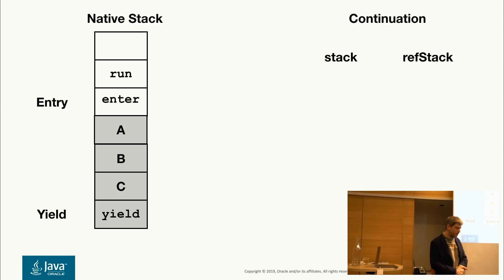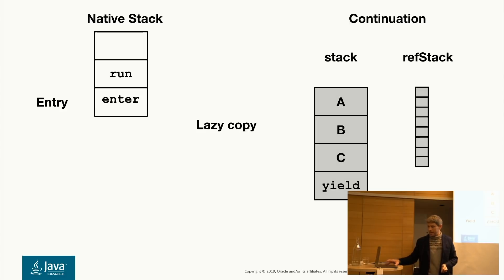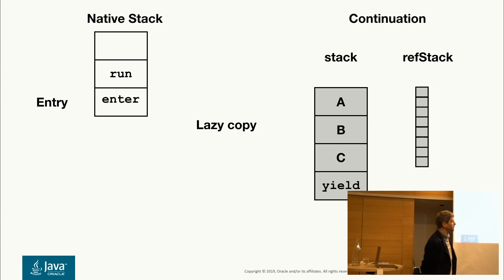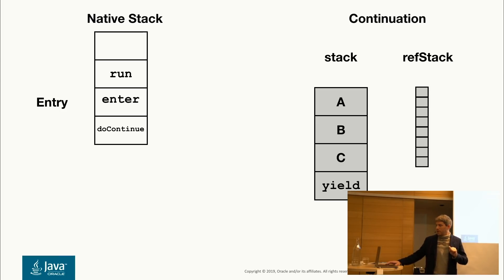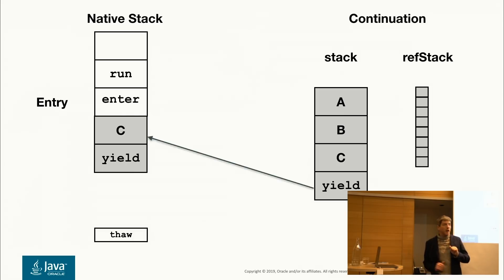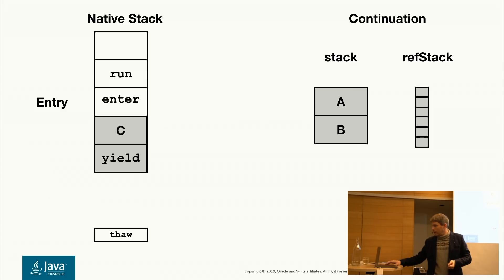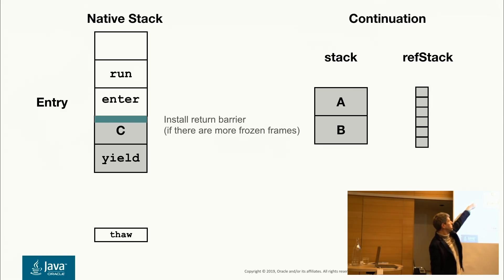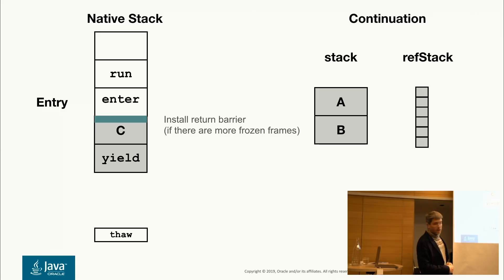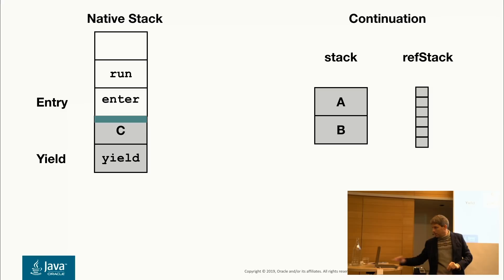Eric Duvblad from the Stockholm office came up with an idea called lazy copy, which is what we implemented in the prototype. The first time you yield the continuation, you do the copying as described — but only that first time. The next time you continue the continuation, you only copy one or two frames, making it more or less a constant operation independent of stack depth. Then we change the return address of that frame and replace it with a pointer to a bit of code we call the return barrier.